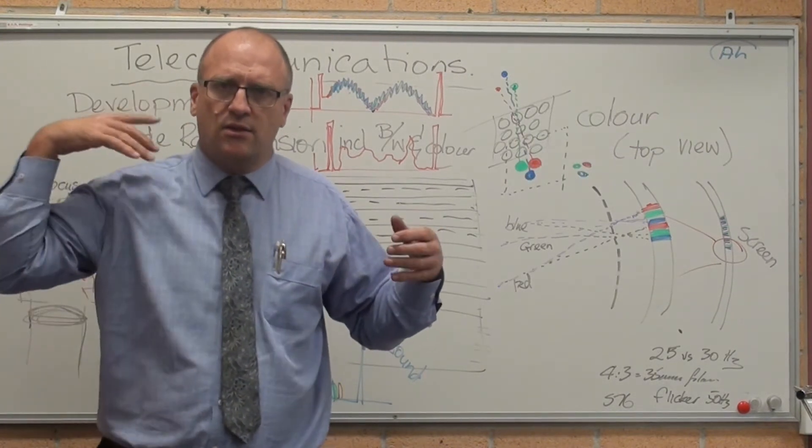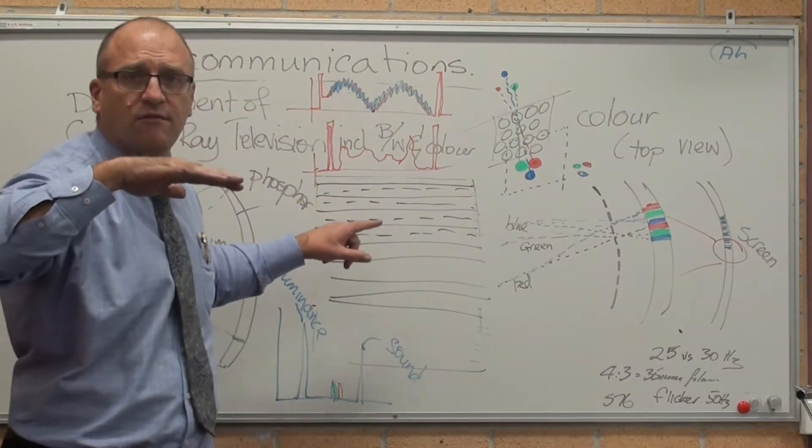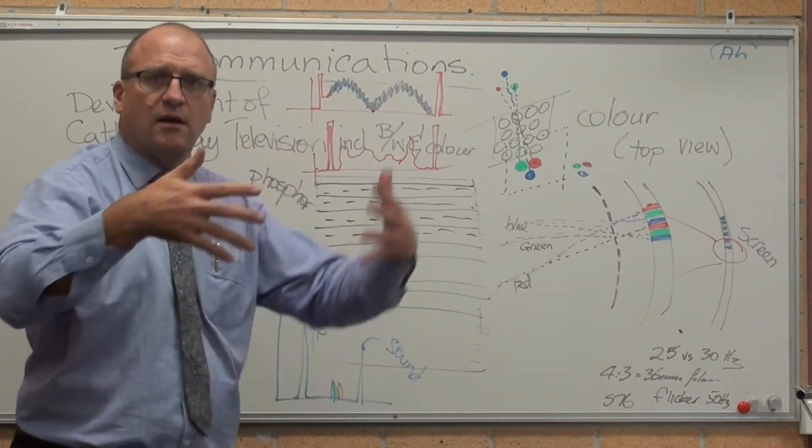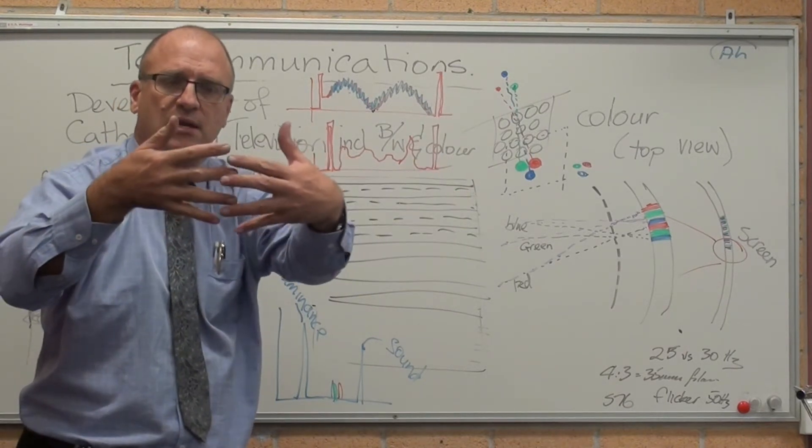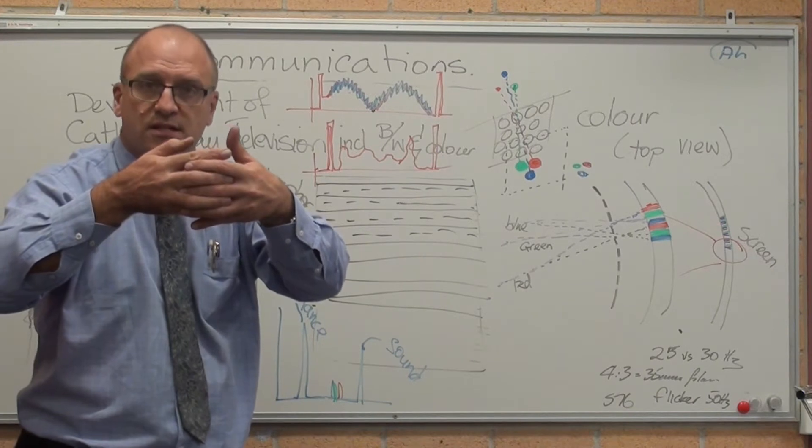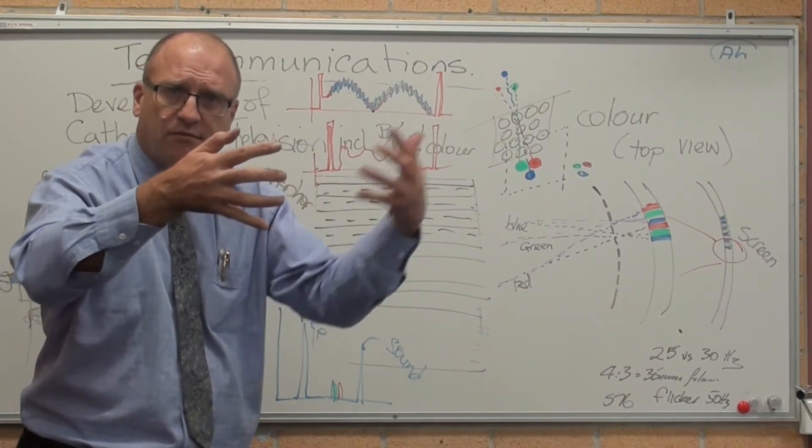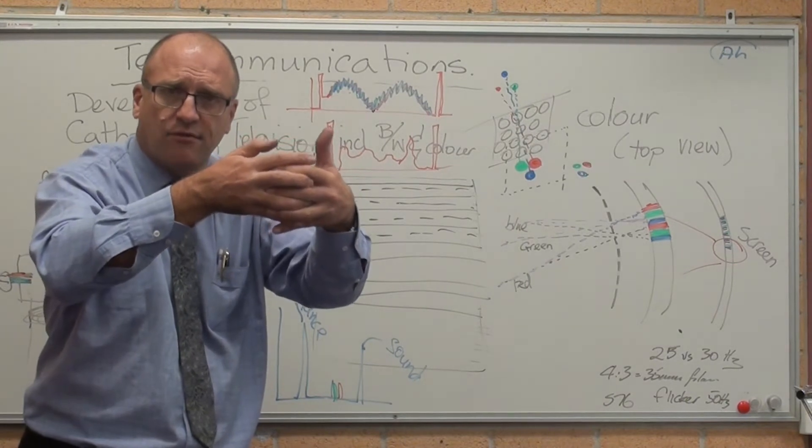So what they did: they transmitted the first line of the television, the third line, the fifth line, the seventh, and then they came back and transmitted second, fourth, sixth, eighth - all the even-numbered lines, all the way down. So you see one half of the picture, then the other half of the frame.